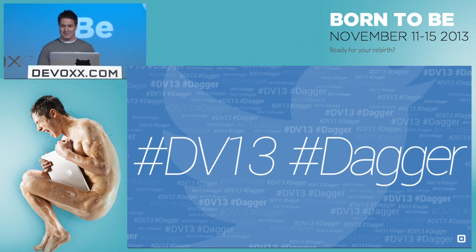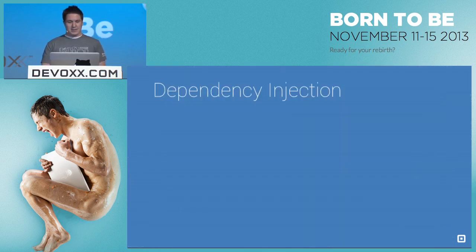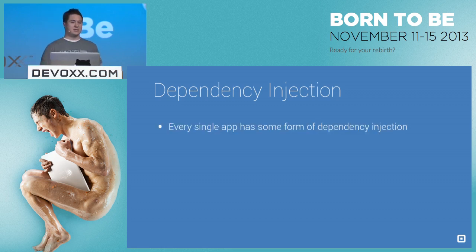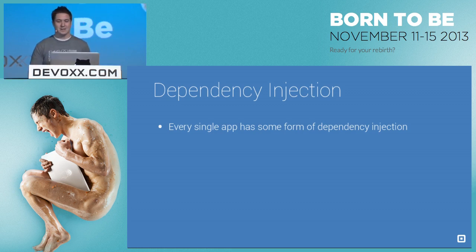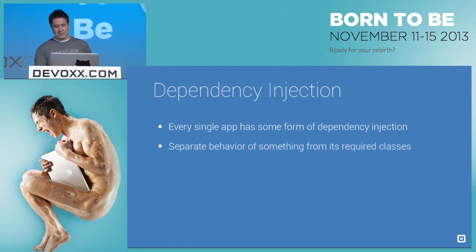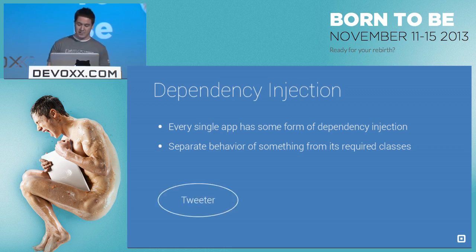We are here to talk about dependency injection. Dependency injection is something that every single one of you have in your app, whether you know it or not. I was sad to see that Chet didn't include it in his patterns talk, but it is a pattern. It requires no libraries to use. What this pattern actually does is it separates the behavior of a class from its required classes to perform the behavior.